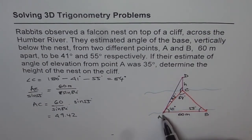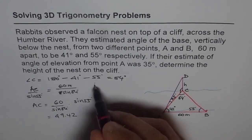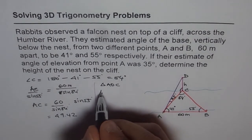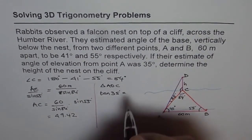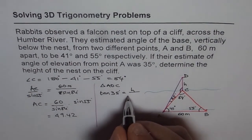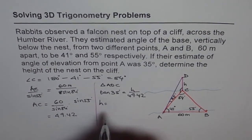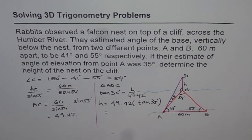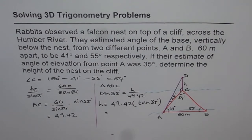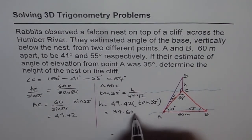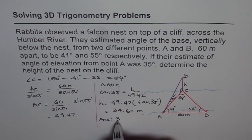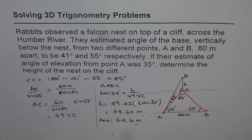Since triangle ADC is a right triangle, we can solve for it now. In triangle ADC: tan of 35 degrees equals height over AC. AC is 49.42 meters. So the height equals 49.42 times tan of 35 degrees. That gives us 34.60 meters. The units are meters. Therefore, the height of the nest on the cliff is 34.6 meters.